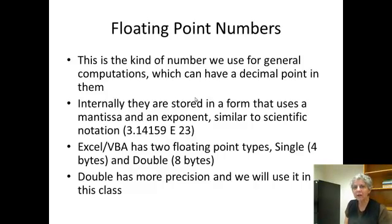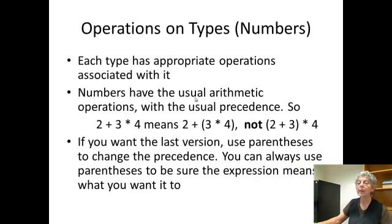The other type of numerical data is floating point. And this is the one you use for general computations, anytime a decimal point might possibly be involved. You're not necessarily working with integer numbers, or if you're working with really huge numbers. So internally they're stored in a form that's like scientific notation if you're familiar with that. So there's a mantissa, the part that contains the actual digits that are in the number, and then an exponent that says how many zeros to tack on to get the actual number that we're interested in. Excel has two floating point types, single which is four bytes, and double which is eight bytes. Obviously double has way more precision, and we'll typically use double.